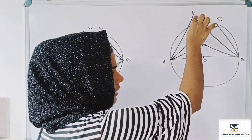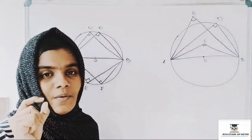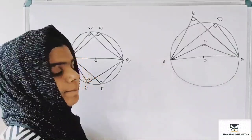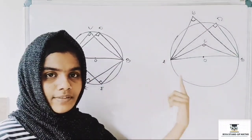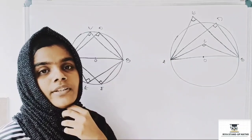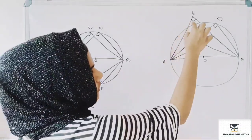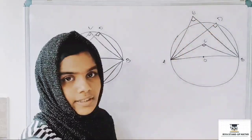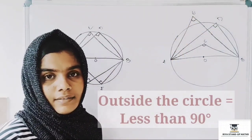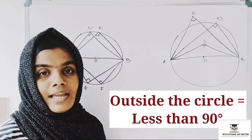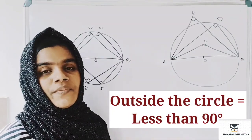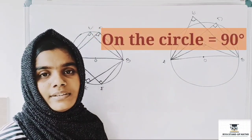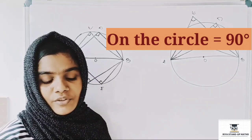You can find the third angle in the outside direction. If the third angle is 90 degrees and you have to make a triangle, the angle on the outside of the circle is less than 90 degrees. On the circle, the angle is 90 degrees — it's a right angle triangle.